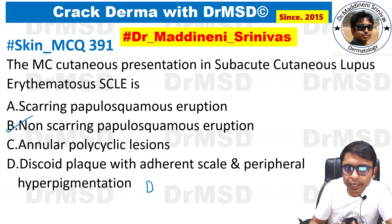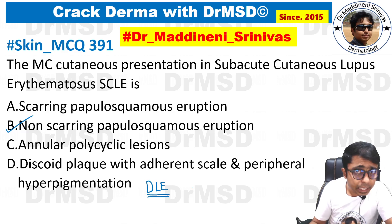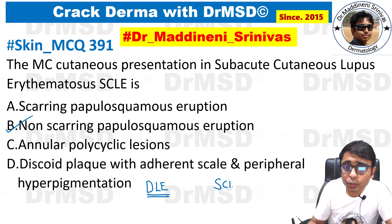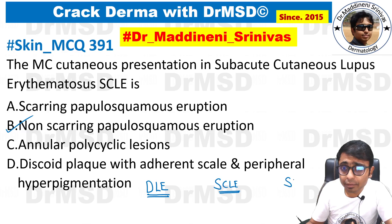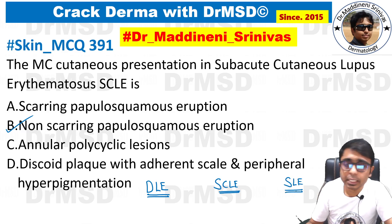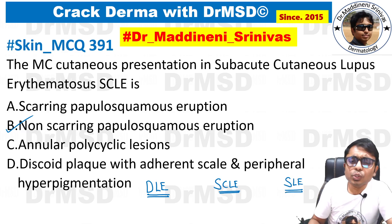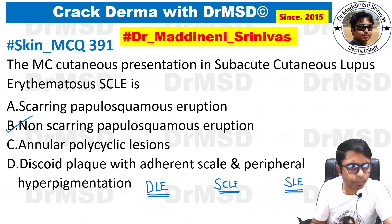Lupus erythematosus is a spectral condition. At one end we have discoid lupus erythematosus (DLE), in the middle we have subacute cutaneous lupus erythematosus (SCLE), and at the other extreme we have systemic lupus erythematosus (SLE).